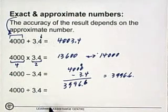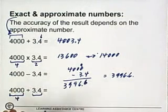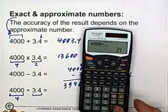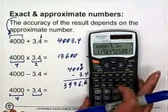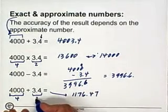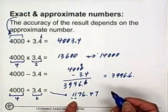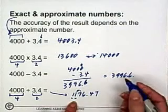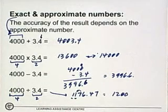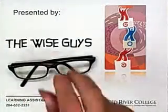For division, we have 2 significant figures in the approximate number and 4 in the exact number, so our answer must have 2 sig figs. 4,000 divided by 3.4 equals 1176.47. We're only allowed 2 sig figs, so we round up because of the 7, giving us an answer of 1,200. And that's it for this video on working with sig figs. This was presented by Wise Guys — have a good day.